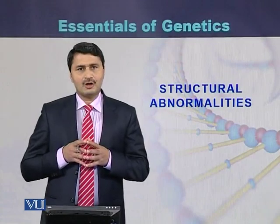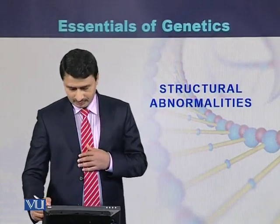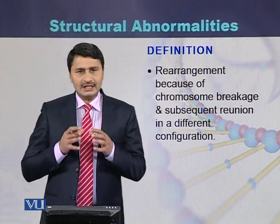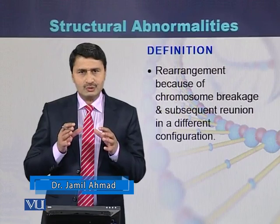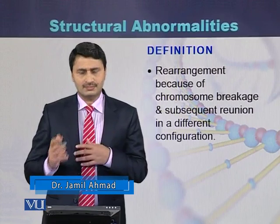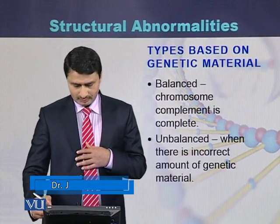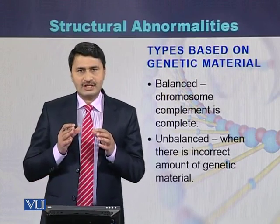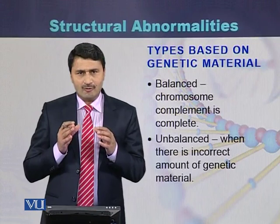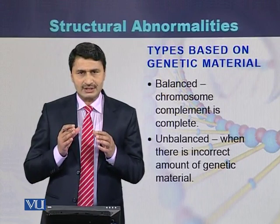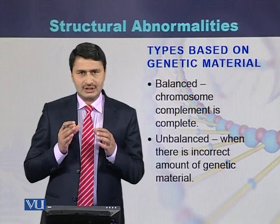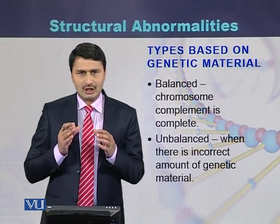Structural abnormalities are rearrangements in the chromosome because of the breakage and reunion of the fragments of the chromosomes. There are two types of structural abnormalities: one is called balanced, if there is no loss of genetic material, and if due to the structural imbalance genetic material is lost, it is called unbalanced.